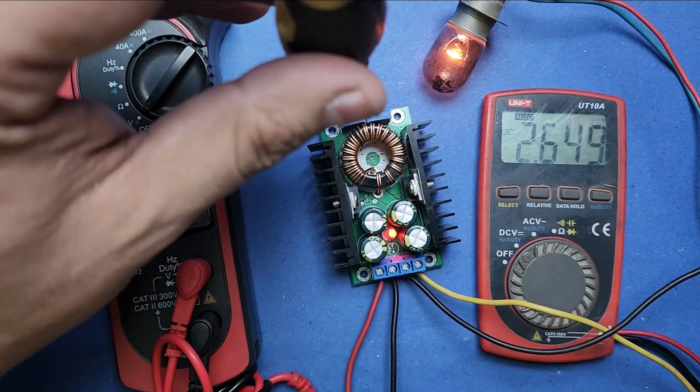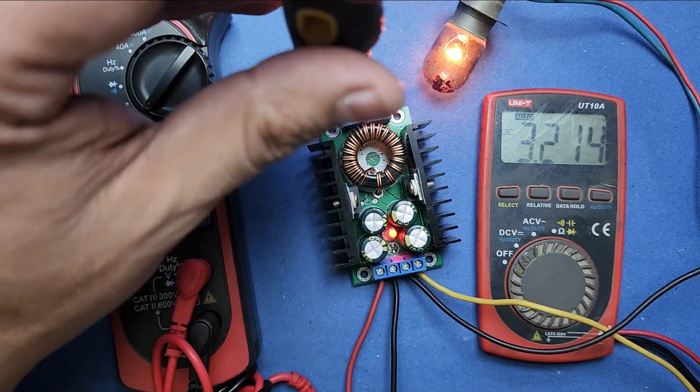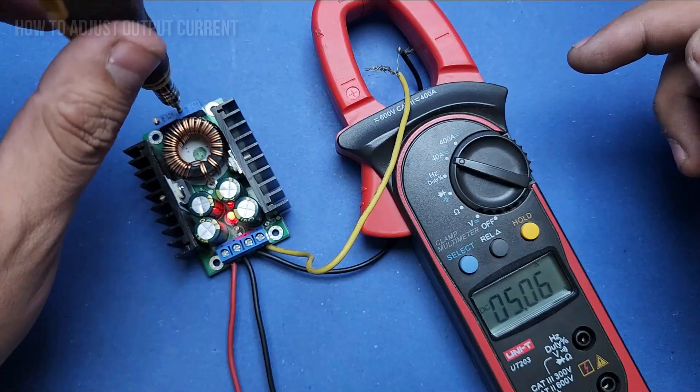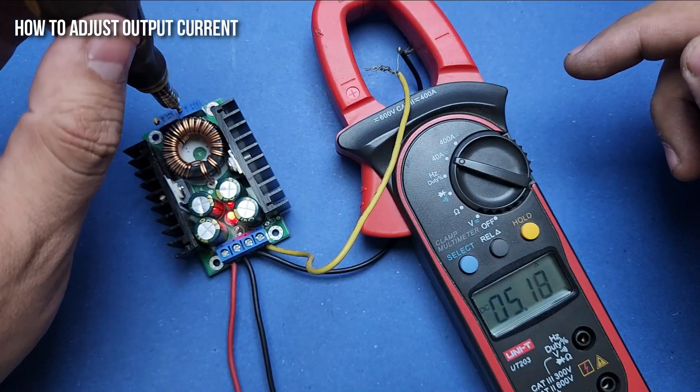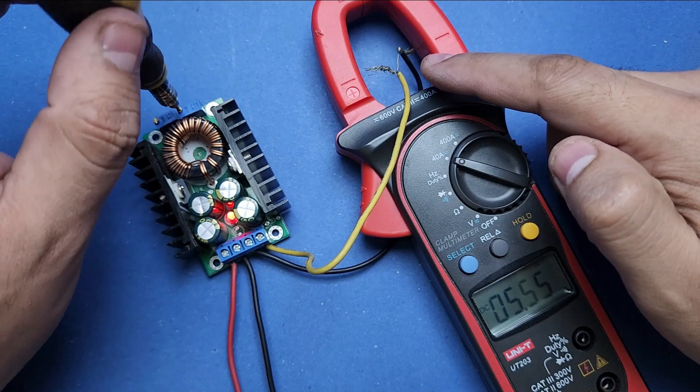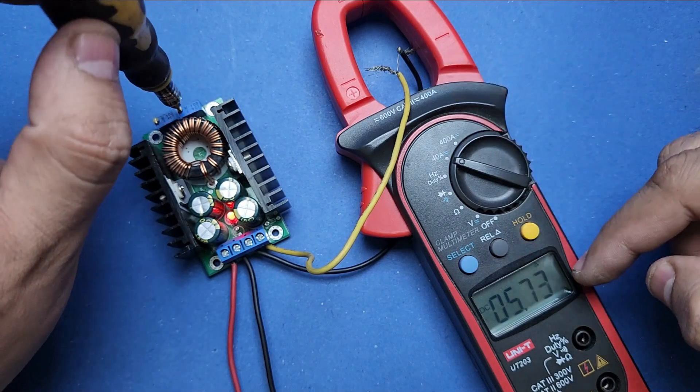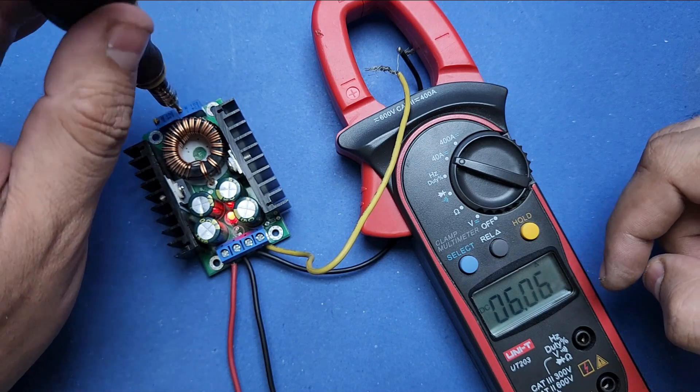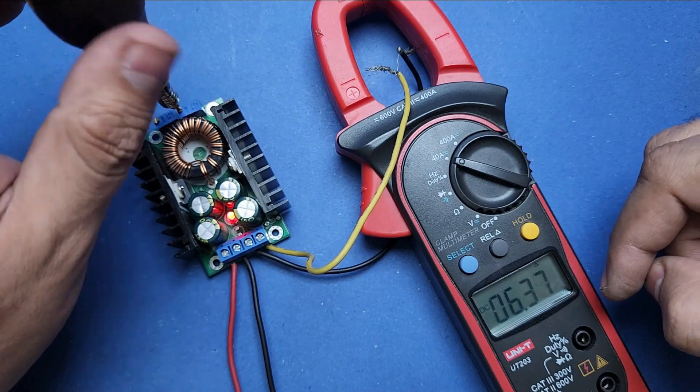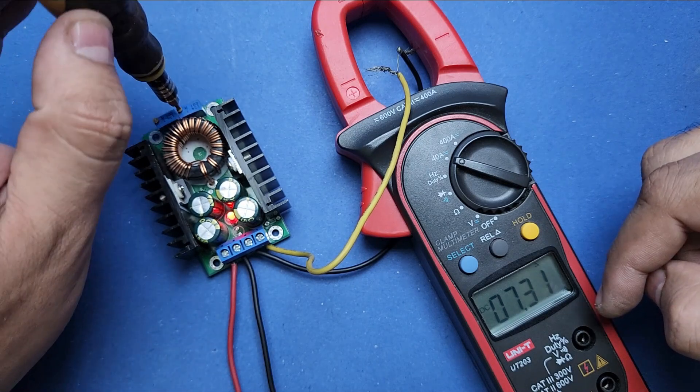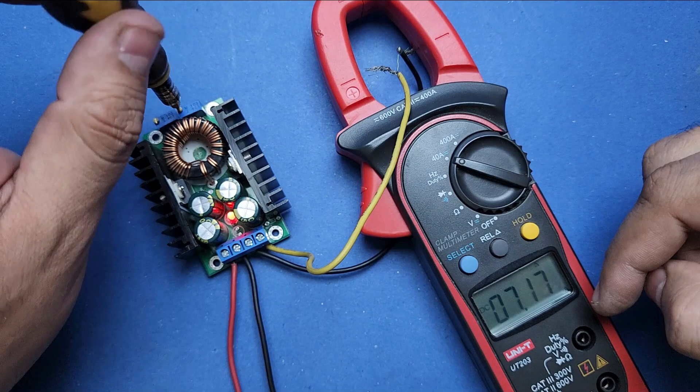XL4016 has the ability to limit the output current. You can adjust the output current using the potentiometer located on the top right of the module. Turning the potentiometer clockwise will increase the output current and turning it counterclockwise will decrease the output current.